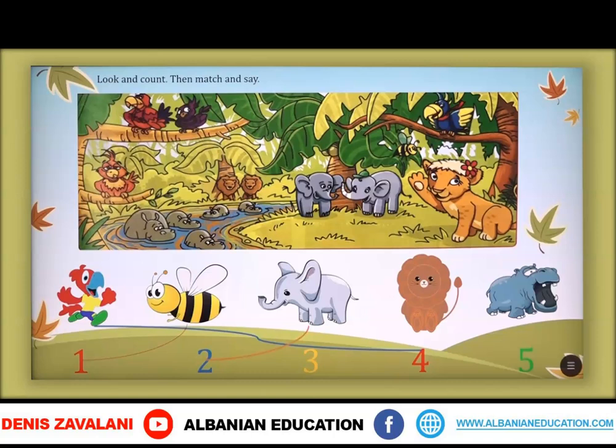Now, let's count the lions. How many lions are there in the photo? One, two, three. There are three lions in the photo. Në fotografi kemi tre luanë. Let's match the lion with a number. Three.